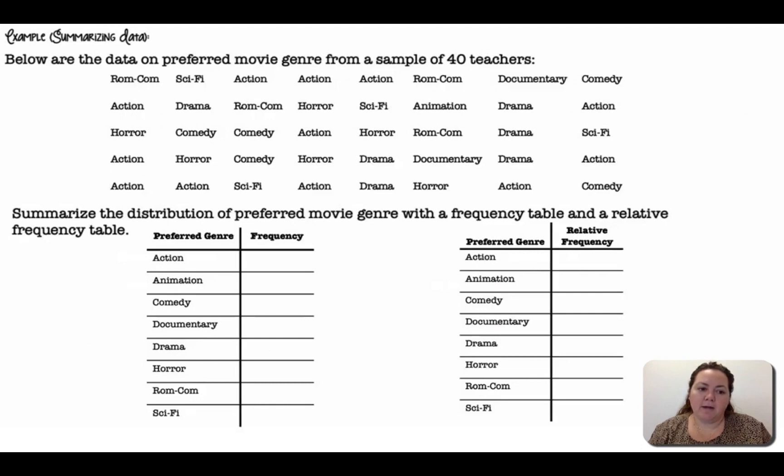All right, summarizing data. Below are the data on preferred movie genre from a sample of 40 teachers. Summarize the distribution of preferred movie genre with a frequency table and a relative frequency table. So we're going to go through and get our counts here. So for action, we're going to go through and count how many total teachers chose action. So there was 12. We're going to go through animation, comedy, documentary, drama, horror, rom-com, and sci-fi. So we have all of our frequencies or the counts, how many times they occurred.